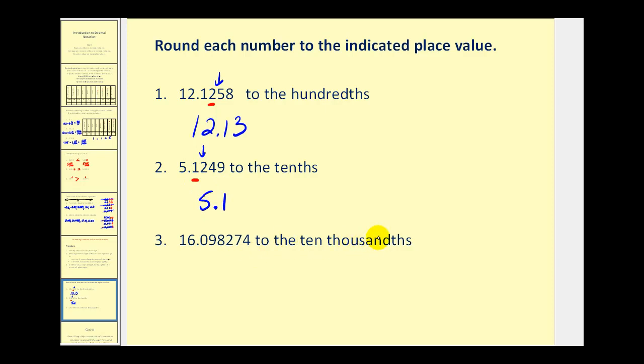And number three, the ten thousandths, we have the tenths, hundredths, thousandths, ten thousandths would be here. The seven is our decision maker, so we're going to round up. So we change a two to a three. Sixteen point zero nine eight three, and then we stop.